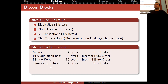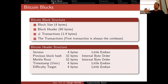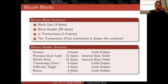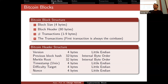We have the timestamp in Unix format — again four bytes. We have the difficulty target, which is an encoded version of that value rather than the raw number. And we have the nonce, also four bytes. All of these four-byte values are 32-bit unsigned integers — think of it like an unsigned integer in C programming.